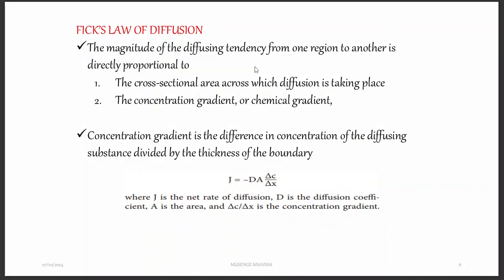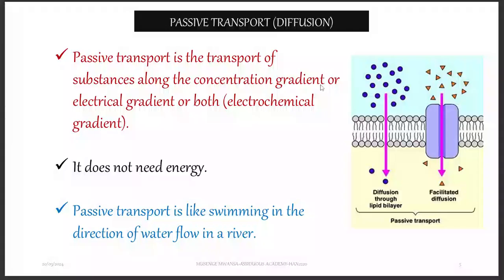One factor is the cross-sectional area across which diffusion is taking place. For example, the cell membrane thickness — the thicker the cell membrane, the slower the rate of diffusion.